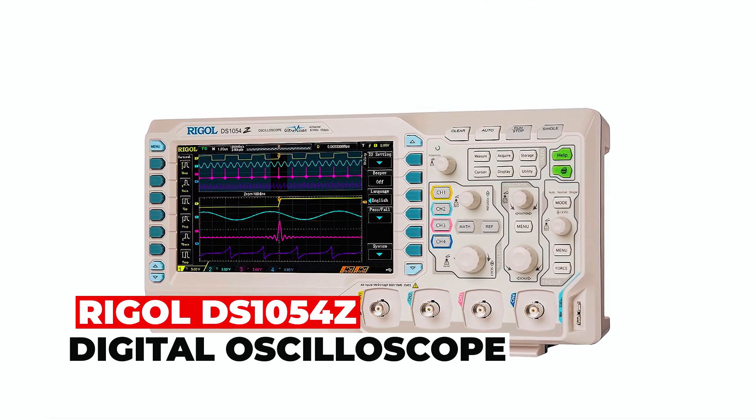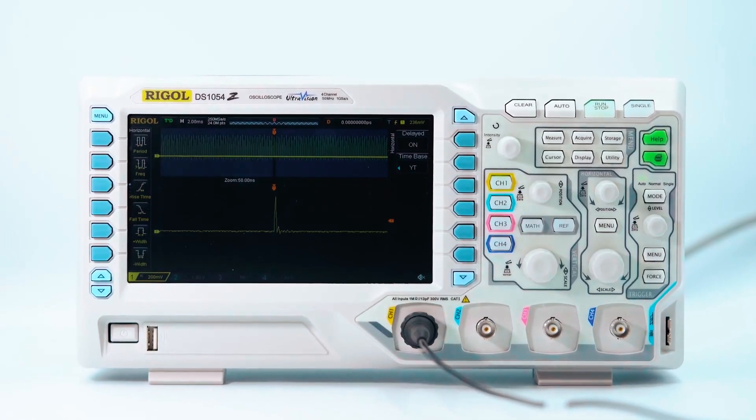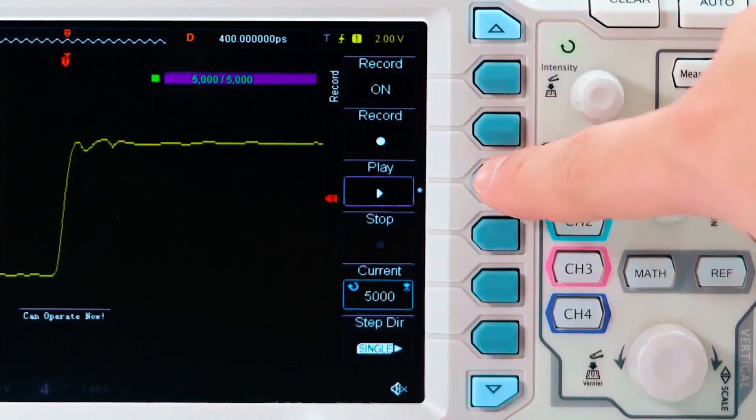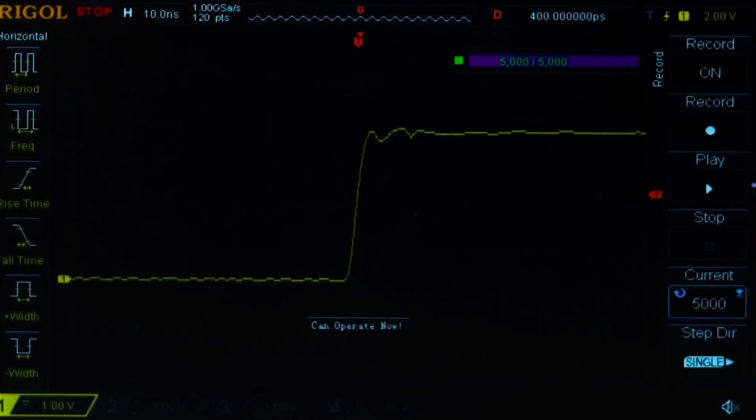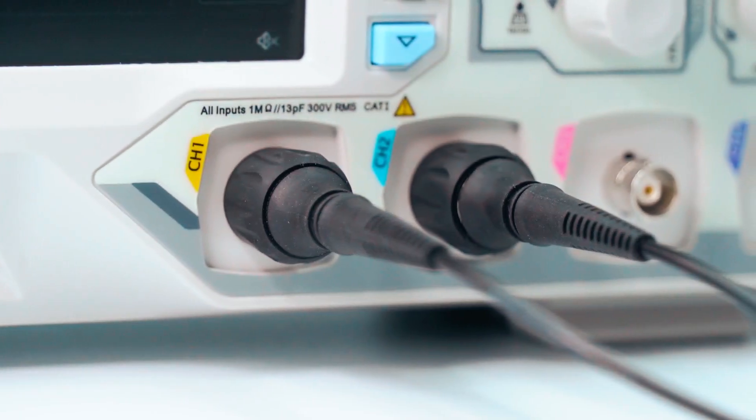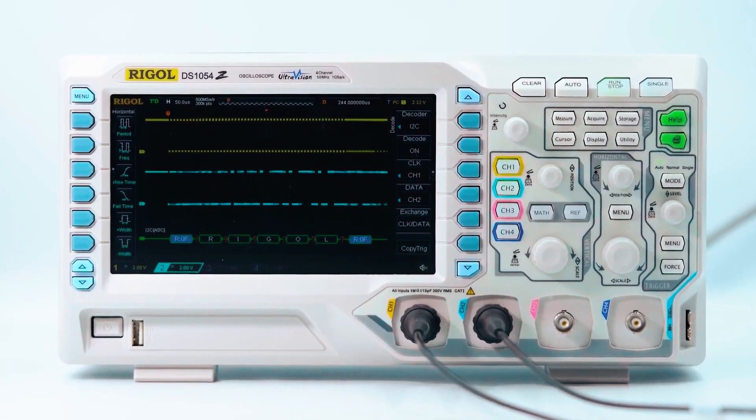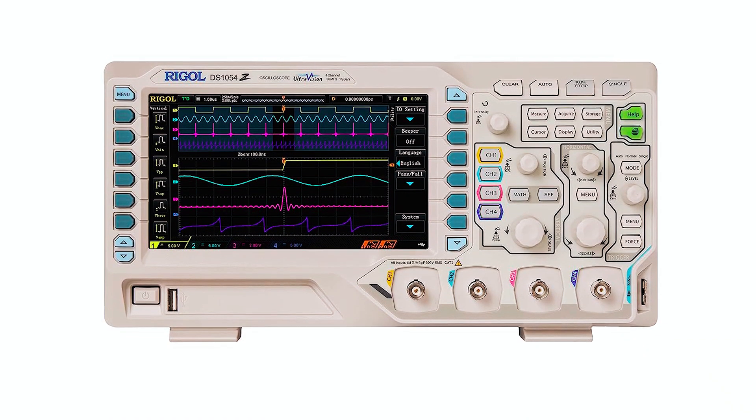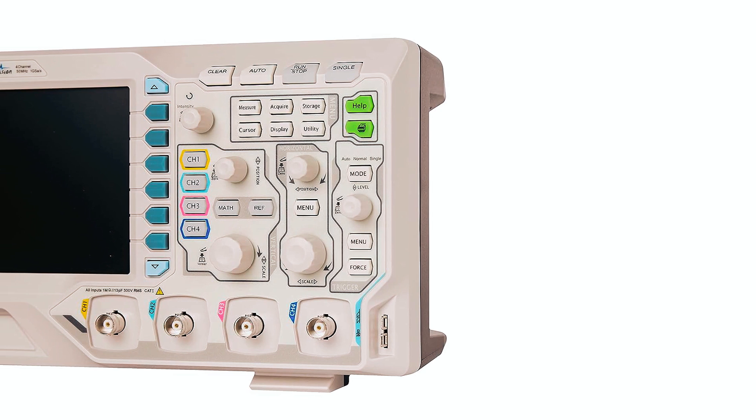RIGAL DS-1054Z Digital Oscilloscope. The RIGAL DS-1054Z Digital Oscilloscope is a high-performance instrument that caters to the needs of engineers and technicians requiring a reliable and accurate tool for signal analysis across various applications. This oscilloscope features four analog channels, a 1 GSa/s real-time sample rate, and up to 24 megapoints memory depth. With its 50 MHz analog channel bandwidth, trigger and bus decoding functions, and low noise floor, it provides precise and efficient waveform analysis.